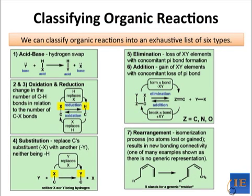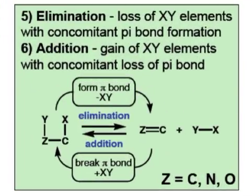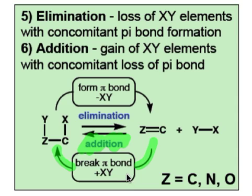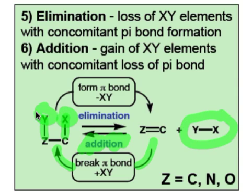In past videos, we've talked about elimination reactions, which involve the loss of XY from the substrate with simultaneous formation of a pi bond. In the next few videos, we're going to think about the opposite process — the so-called addition of XY across a double bond. These kinds of reactions form products with new single bonds to X and Y. We call the process addition because the elements of XY are added across the double bond in the starting material.